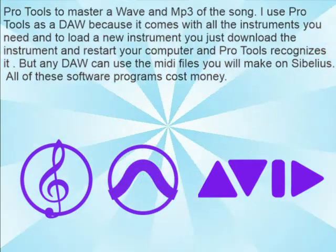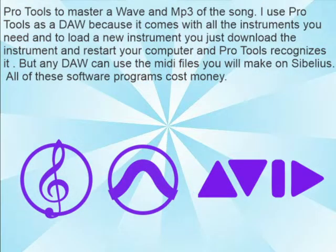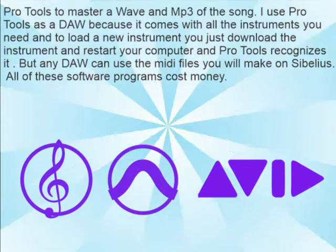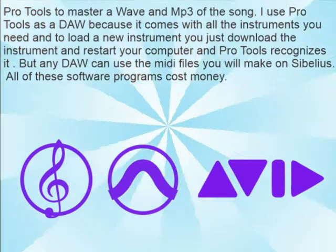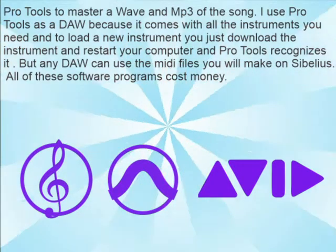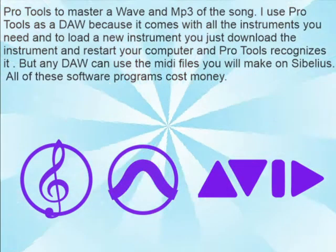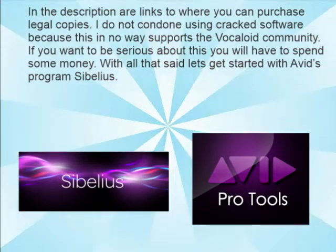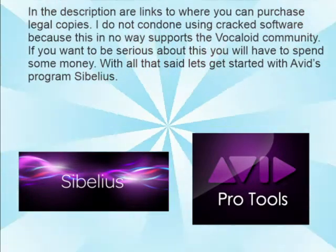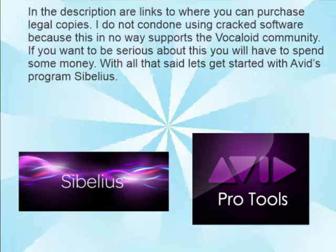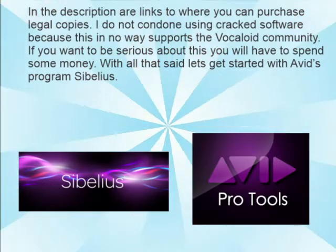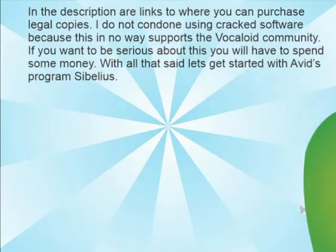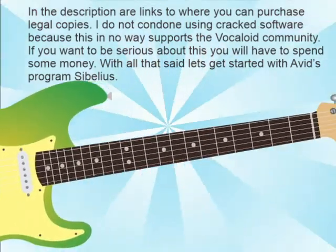I use Pro Tools as a DAW because it comes with all the instruments you need, and to load a new instrument, you just download it and restart your computer, and Pro Tools recognizes it. But any DAW can use the MIDI files you will make in Sibelius. All of this software costs money. In the description are links to purchase legal copies. I do not condone using crack software because this in no way supports the Vocaloid community. If you want to be serious about this, you will have to spend some money. With all this said, let's get started with Avid Sibelius.